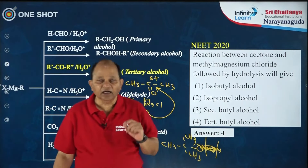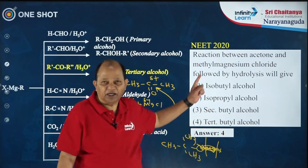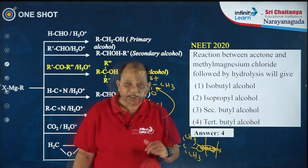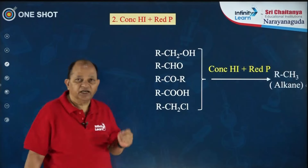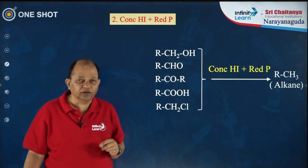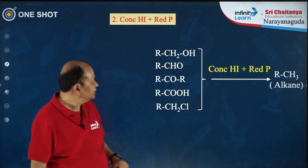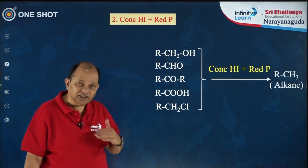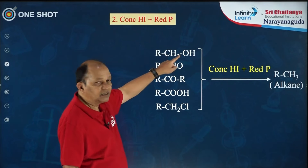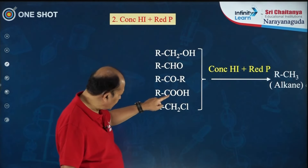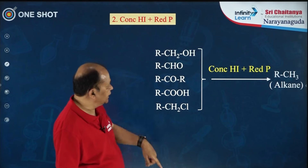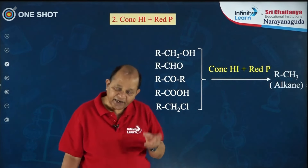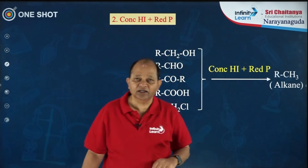On Grignard reagent, those are the questions that appeared in the NEET exam for the past five years. The next reagent is concentrated HI plus red phosphorus — this is also one of the important reagents widely used in organic chemistry for conversions, preparations, and synthesis. Primary alcohol, aldehyde, ketone, carboxylic acid, or alkyl halide when reacted with concentrated HI and red phosphorus gives the product alkane.